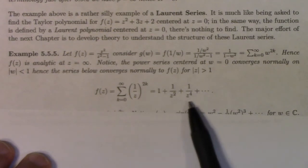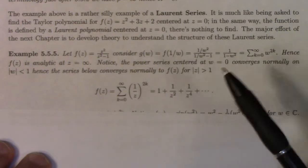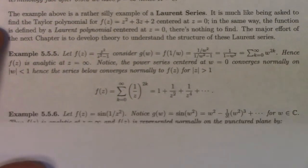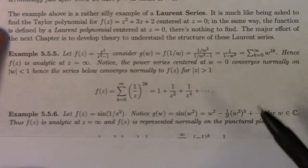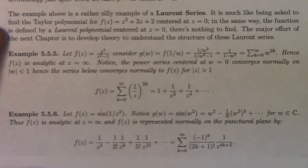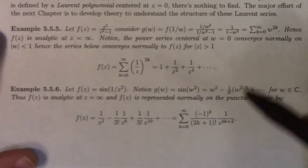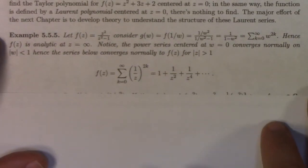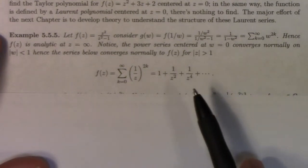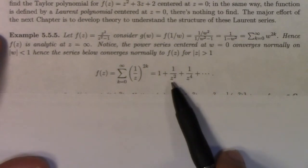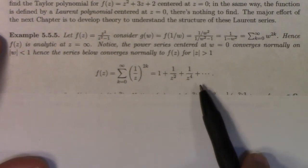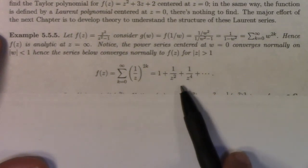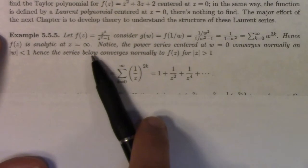Going back to z notation, we have f of z equals the sum from k equals 0 to infinity of 1 over z to the 2k. This right here is what's called the Laurent series. This one is analytic at infinity because there's a power series in w centered at zero. The intuition: it's analytic at infinity if when you expand it in powers of z, you don't have any positive powers of z — all you've got is a constant and negative powers of z, reciprocal powers of z.